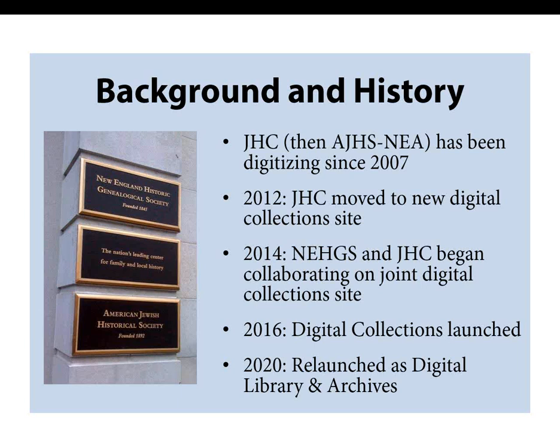The Digital Library and Archives had its start in the digitization program of the Weiner Family Jewish Heritage Center, then known as the American Jewish Historical Society New England Archives. The JHC began digitizing their collections in 2007 and moved to a new, easier-to-use online system in 2012. In 2014, after JHC became part of American Ancestors, we began working together on a joint digital collection site. The redesigned site, American Ancestors Digital Collections, was launched in March 2016. We began redesigning and upgrading the site two years later, and in September of this year, the site was relaunched with the new name, Digital Library and Archives.